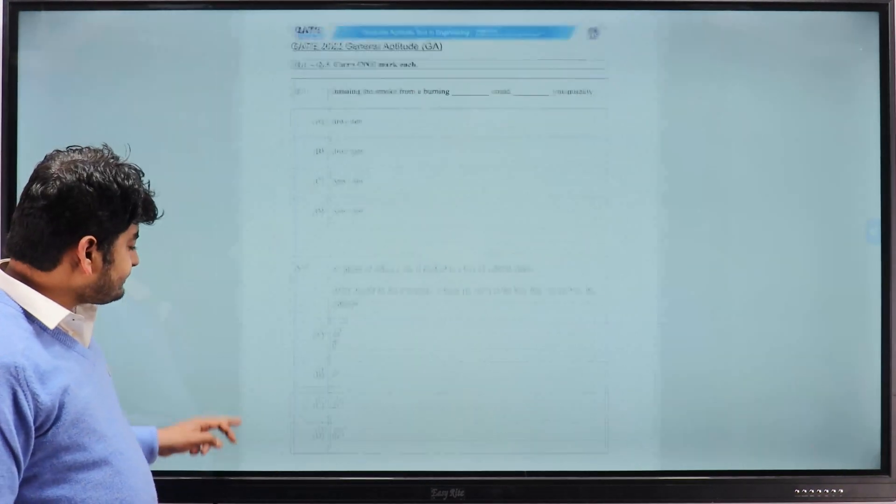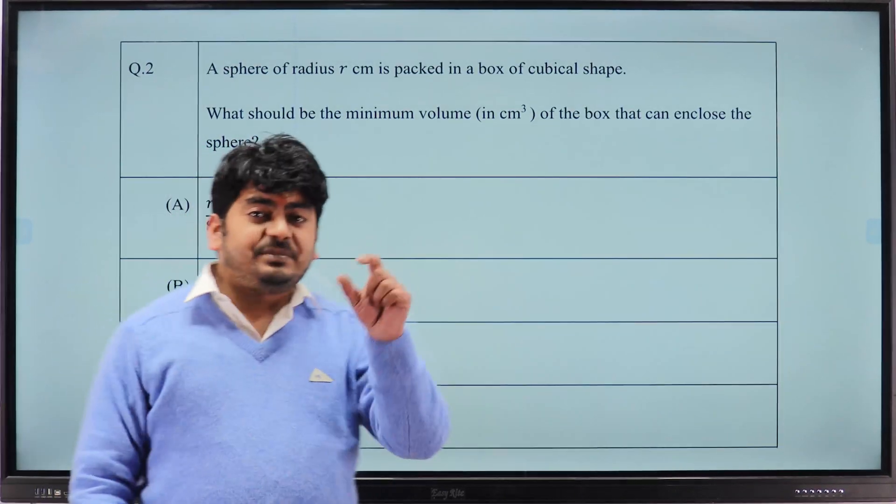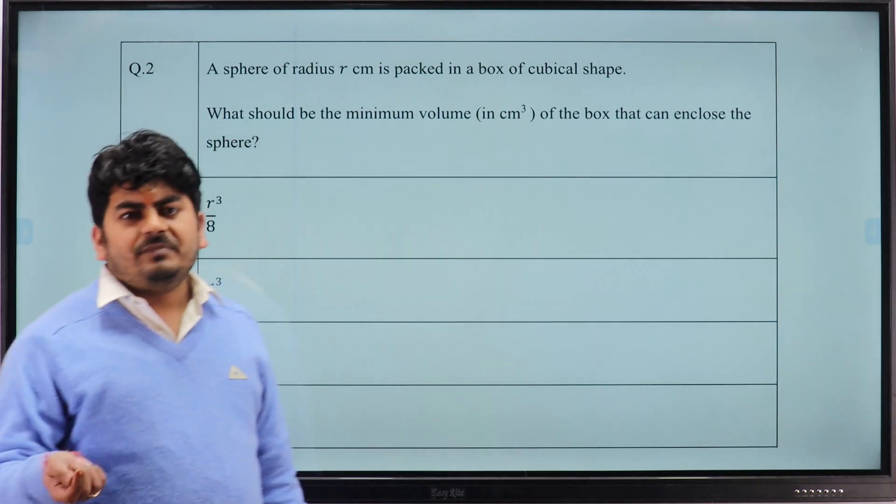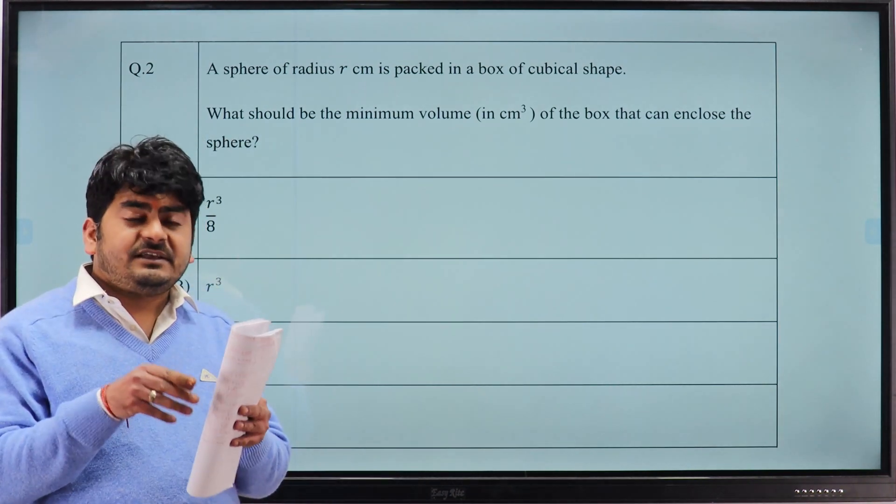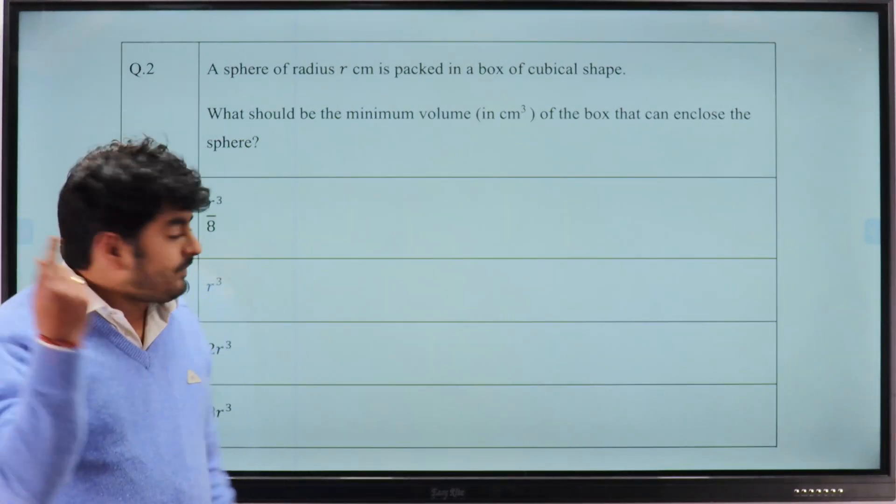For the second question where a sphere is present in a cubical shape, what will be the minimum volume of the cube? Minimum volume means when the entire sphere is enclosed in the cube. The volume of the cube will be d cubed, d is the answer here.